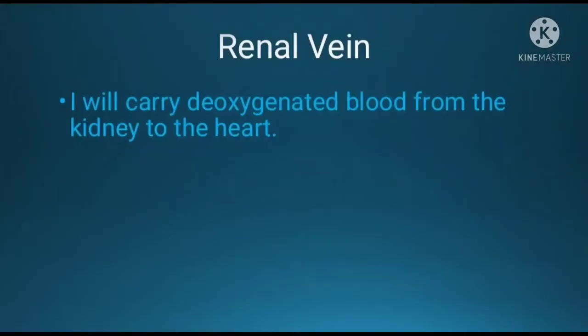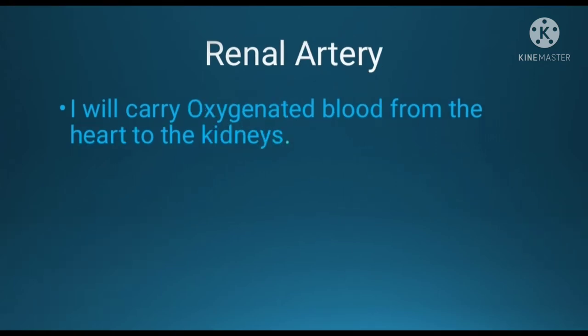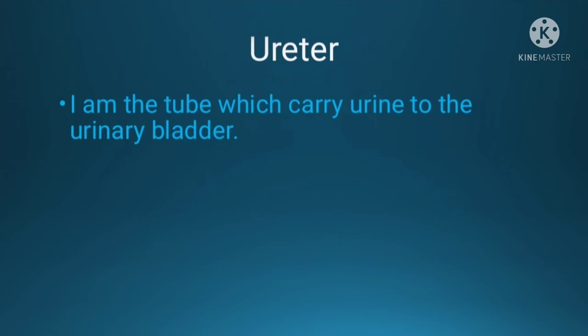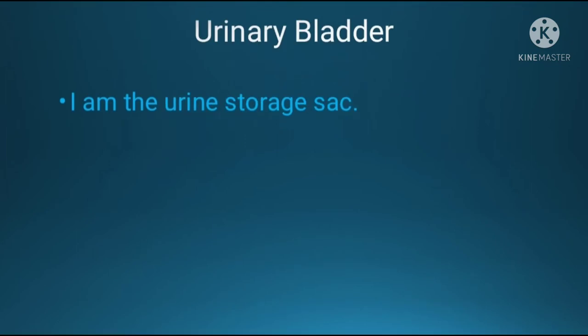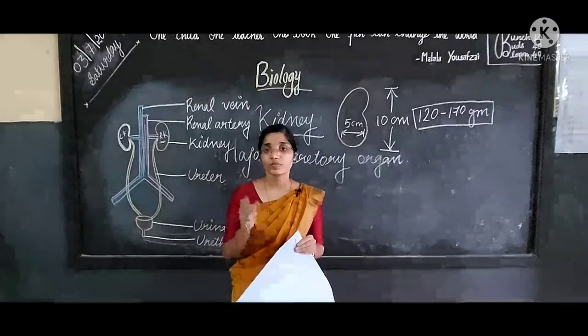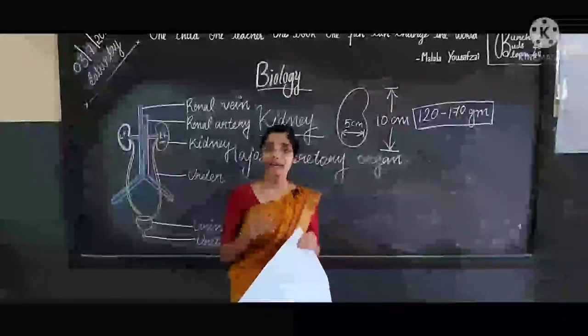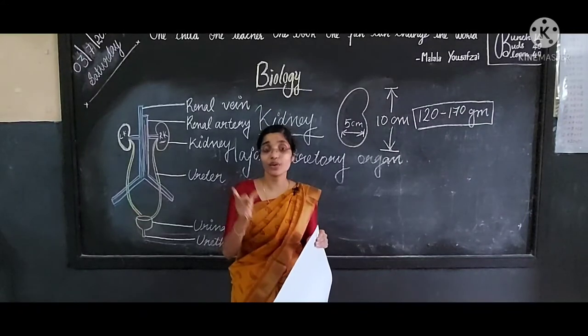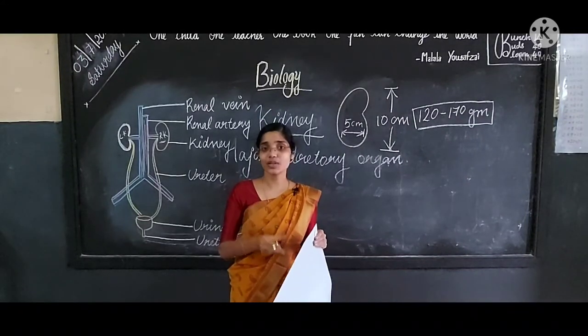The renal vein carries deoxygenated blood from the kidney to the heart. The renal artery carries oxygenated blood from the heart to the kidneys. The ureter is a tube which carries urine to the urinary bladder. The urinary bladder stores urine and acts like a sac. The urethra expels the urine out. We all read the activity card which tells us about the various functions of kidney and its associated parts.